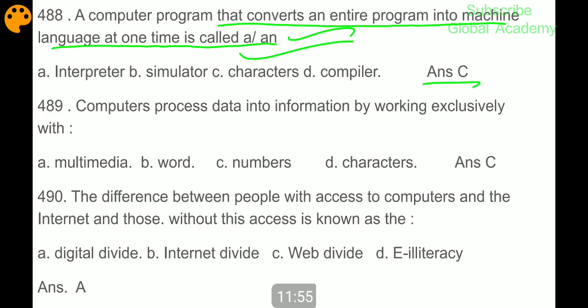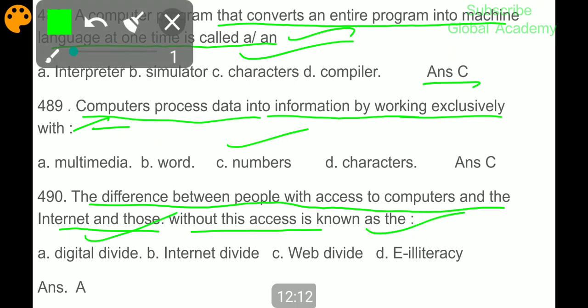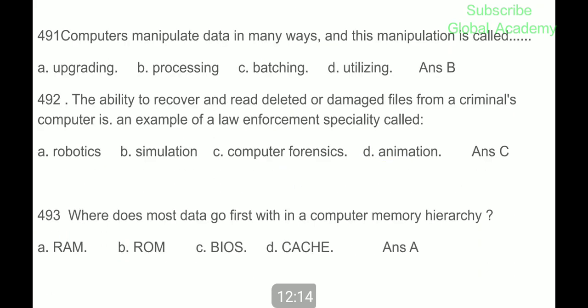Computers process data into information by working exclusively with numbers. The difference between people with access to computers and the internet and those without this access is known as digital divide. Computers manipulate data in many ways and this manipulation is called processing.